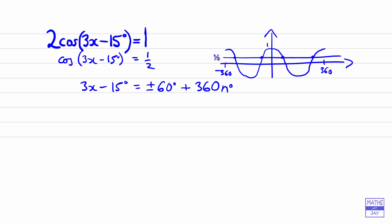So we just need to make x the subject now. Let's start by dividing by 3, so we've got x minus 5 is equal to—swap this around—so we've got the 360 divided by 3 first, so that's 120n, and then dividing the plus or minus 60 by 3 we get plus or minus 20.